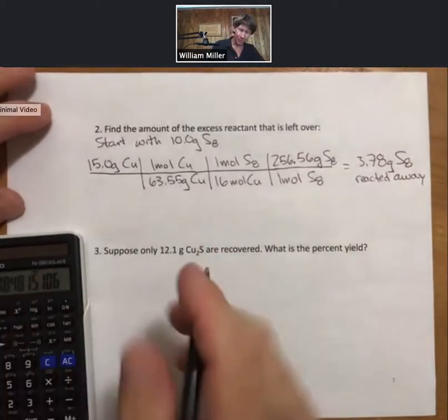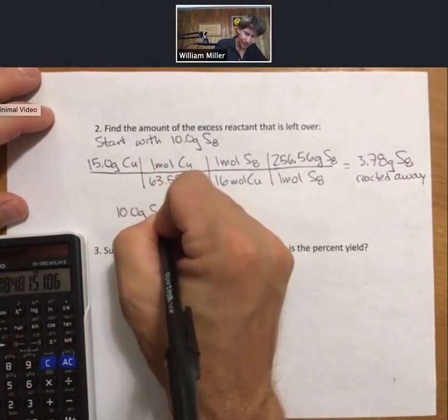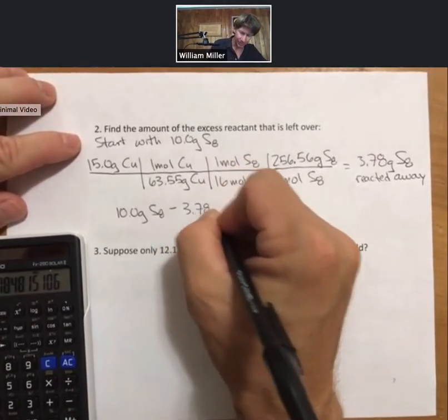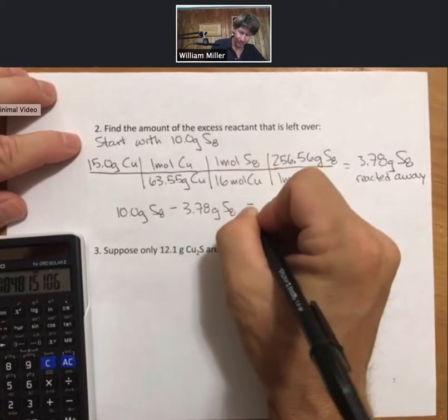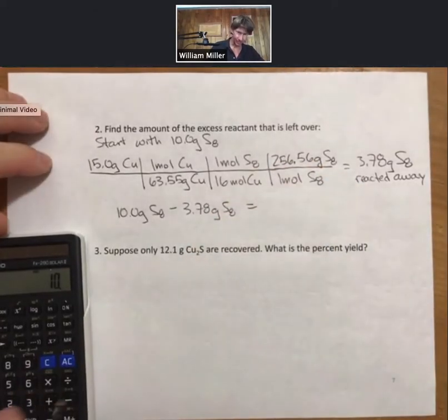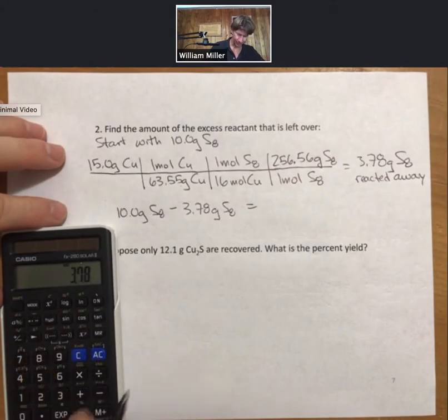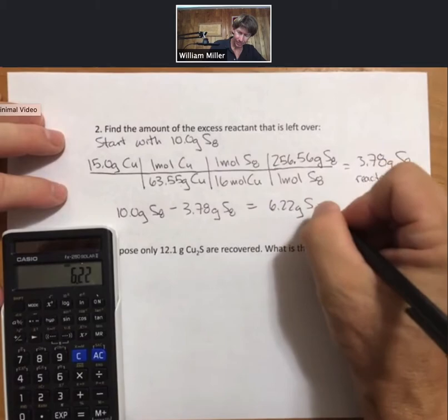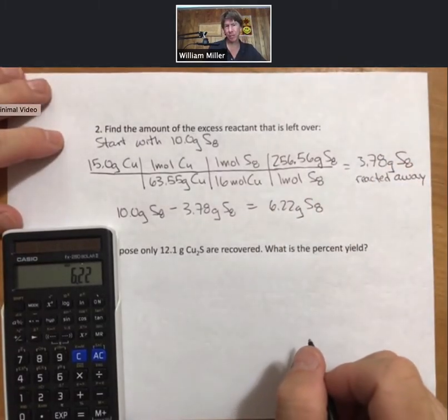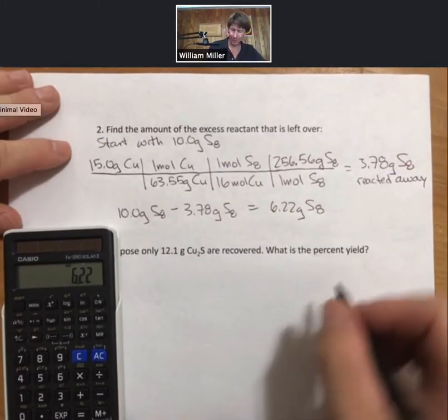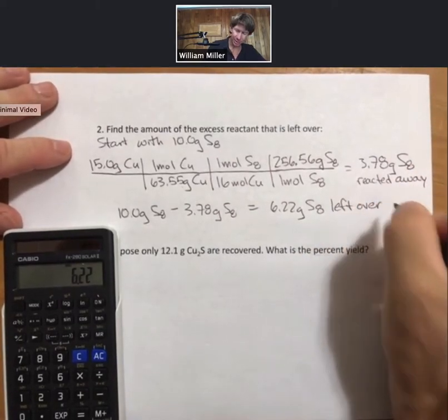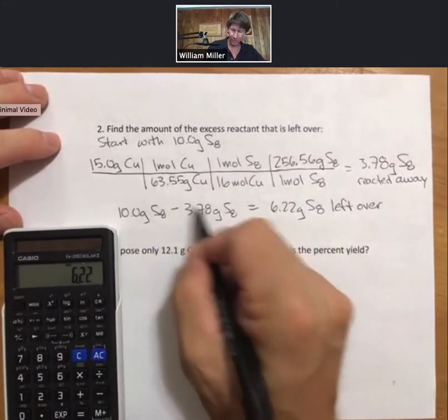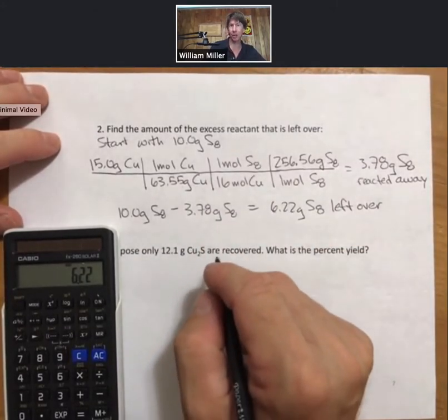Add our leftover amount. Start with our starting amount, subtract what reacted away. And 6.22 grams S8 leftover. With three sig figs, always fine. Of course, if you follow the sig figs using these numbers, you would end up with 6.2, also fine.